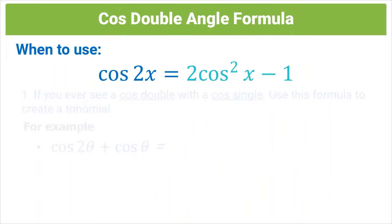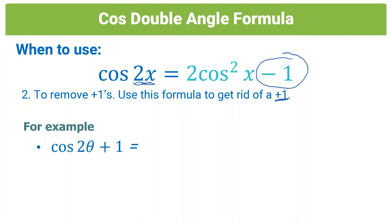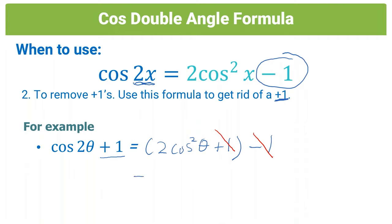The second use of this formula: it can also be used to remove a positive 1 when you see a cos double, because the formula has a negative 1. For example, given cos 2θ + 1, substitute 2cos²θ − 1 to get (2cos²θ − 1) + 1. The +1 cancels the −1, leaving simply 2cos²θ.